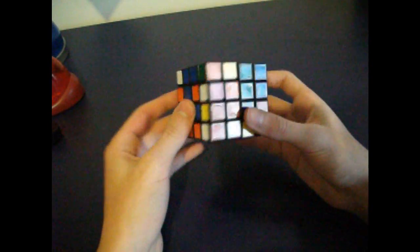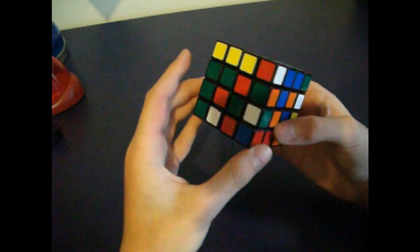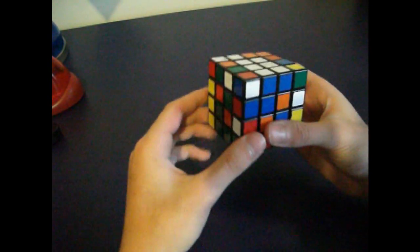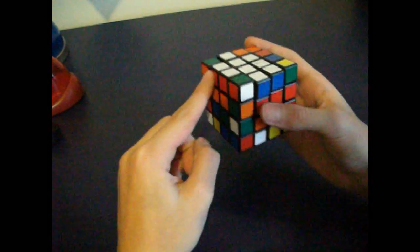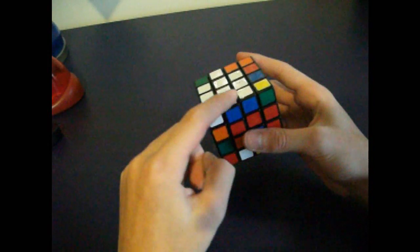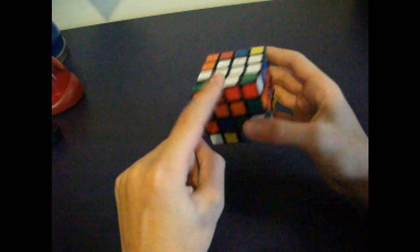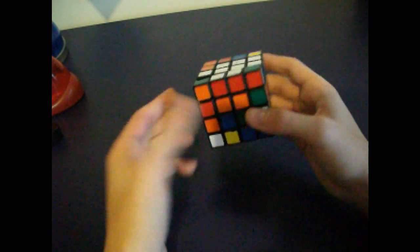Once you get a second one, you want to put it in the correct relation to the other edge that you put. So red, white, and blue—that's an easy way to remember it.